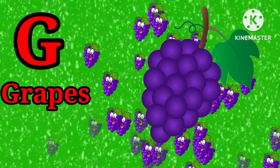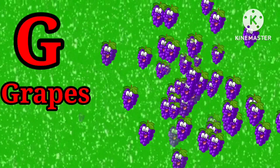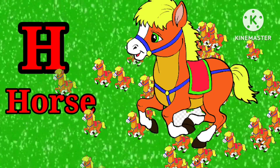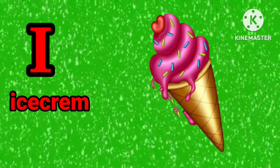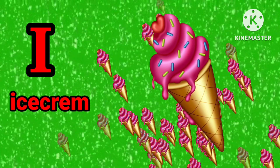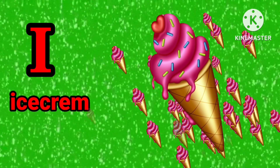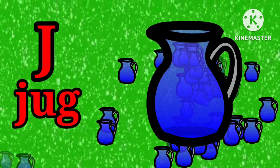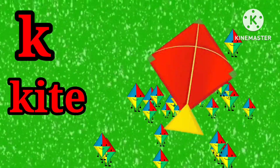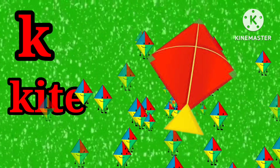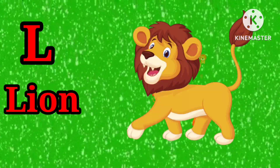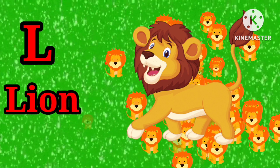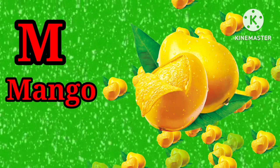G for grabs, H for horse, I for ice cream, J for jug, K for kite, L for lion, M for mango.